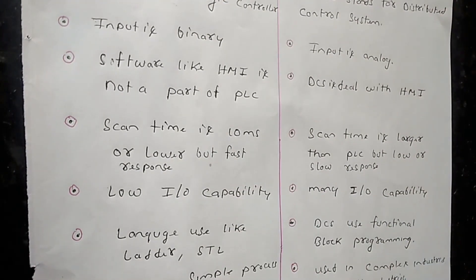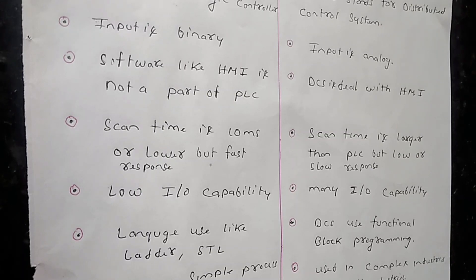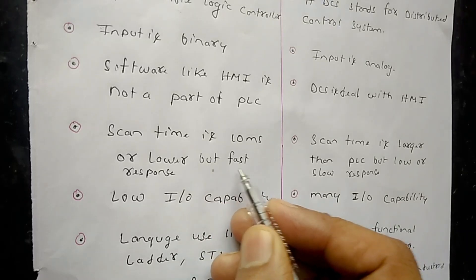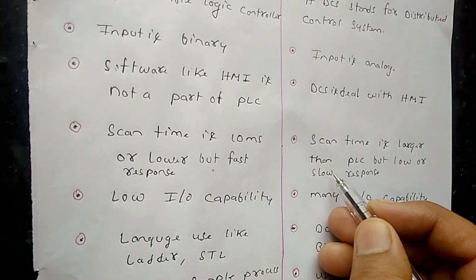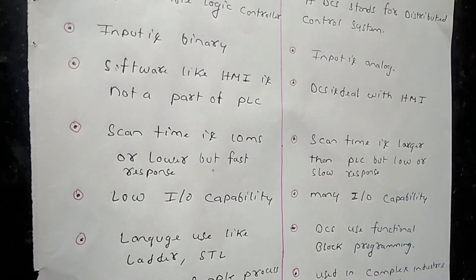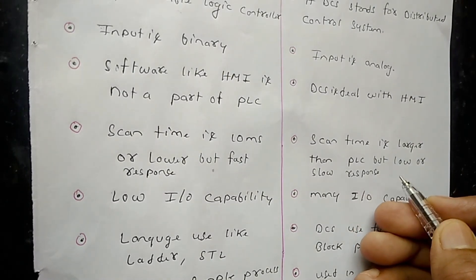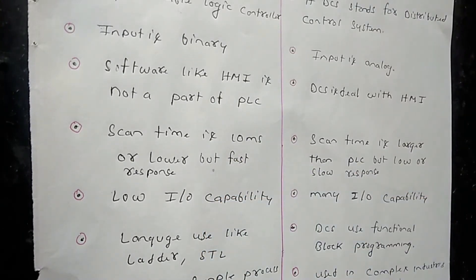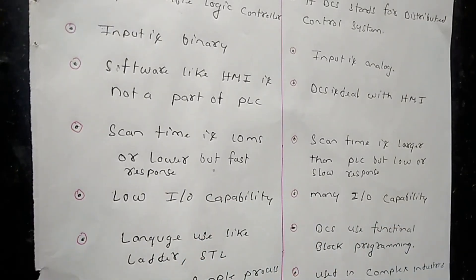Next is scan time. The total time taken to perform a scan is called scan time. Scanning involves reading input, executing the program, diagnosing communication, and updating the output. PLC has a fast response and low scan time, while DCS has a larger scan time and slower response. The fast response makes PLC ideal in case of safety or fire control.